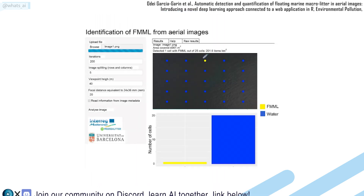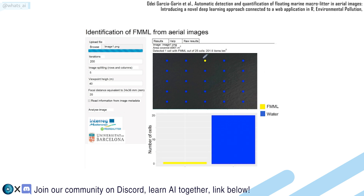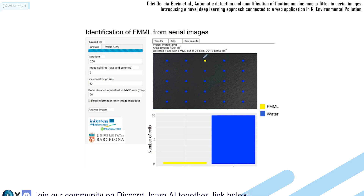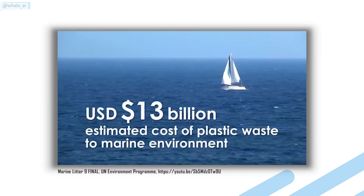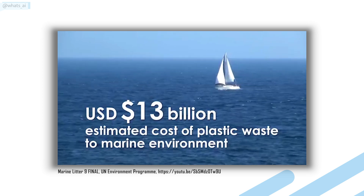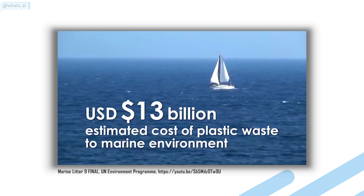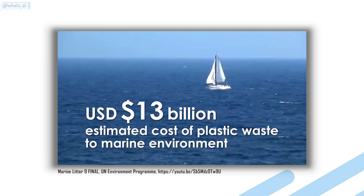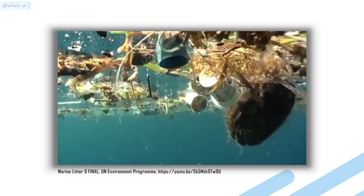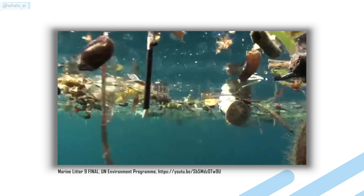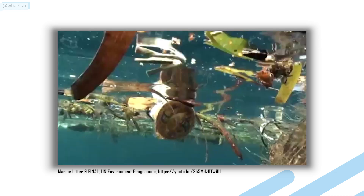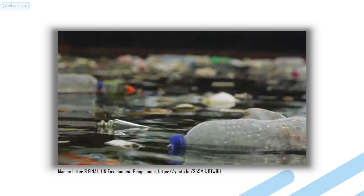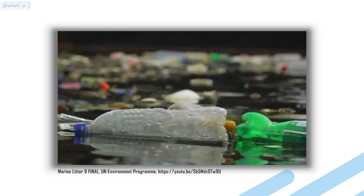They used the Shiny package of R to develop their application. Their algorithm allows the detection and quantification of FMMLs, as well as providing support to the monitoring and assessment of this environmental threat. However, it's still not completely automated yet and requires a human in the loop. As of now, they are still looking for more annotated data to allow their algorithm to also identify the size, color, and type of FMML, which are very relevant information for planning well-targeted policy and mitigation measures. This is still an amazing application of deep learning with a great use case that will benefit everyone.